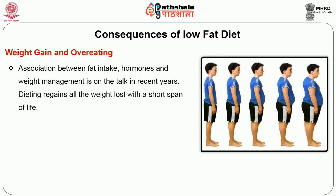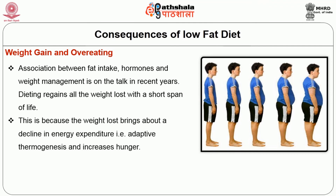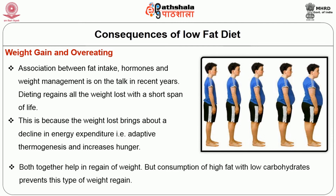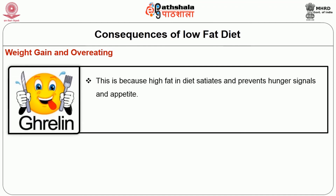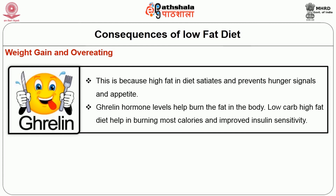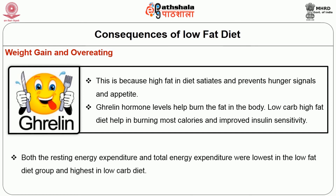Weight gain and overeating are associated with low fat diets. Dieting regains all the weight loss within a short span because weight loss brings about a decline in energy expenditure through adaptive thermogenesis and increases hunger. Consumption of high fat with low carbohydrates prevents this type of weight regain because high fat in the diet satiates and prevents hunger signals and appetite. Ghrelin hormone levels help burn fat in the body. Low carb, high fat diet helps in burning more calories and improving insulin sensitivity, with the lowest total energy expenditure seen in the low fat diet group.